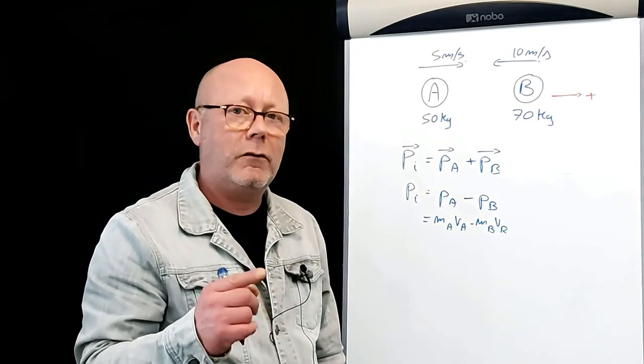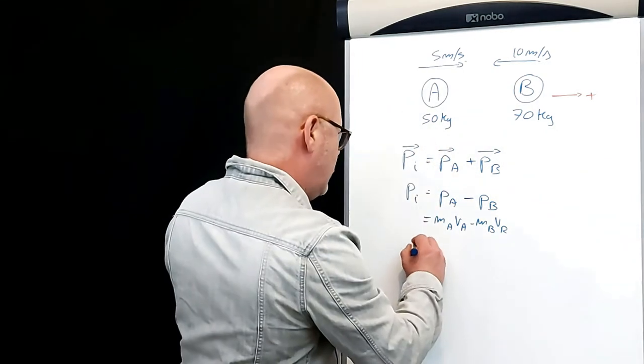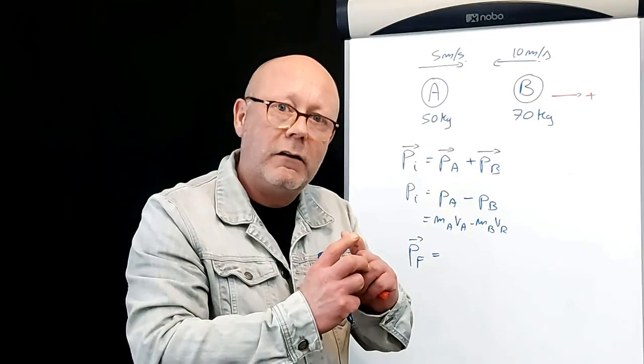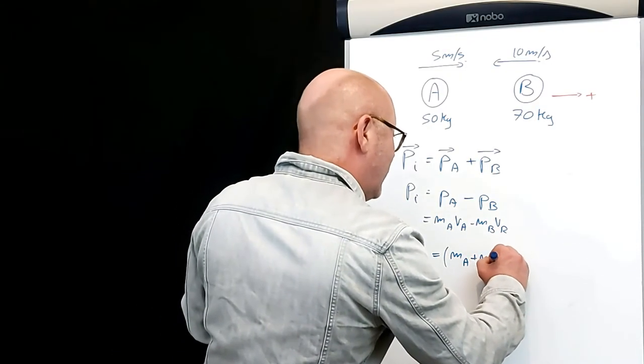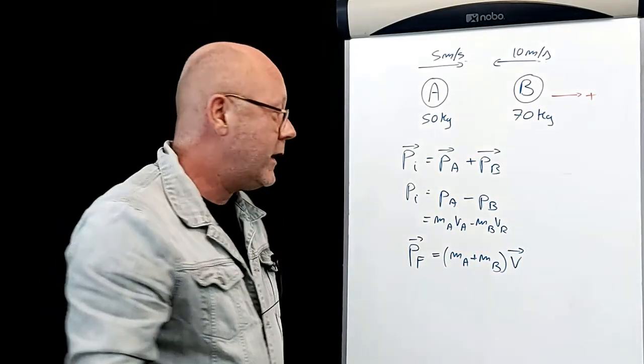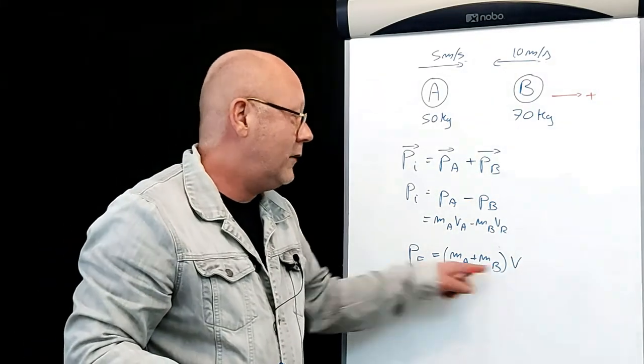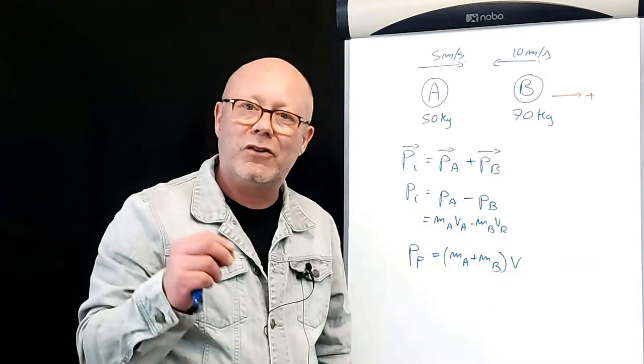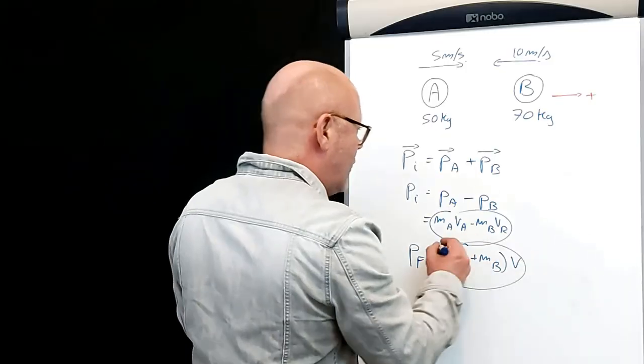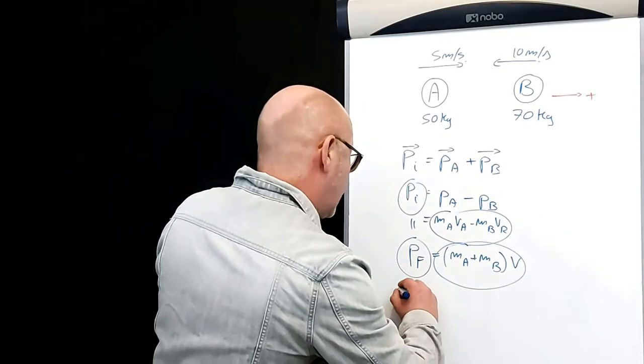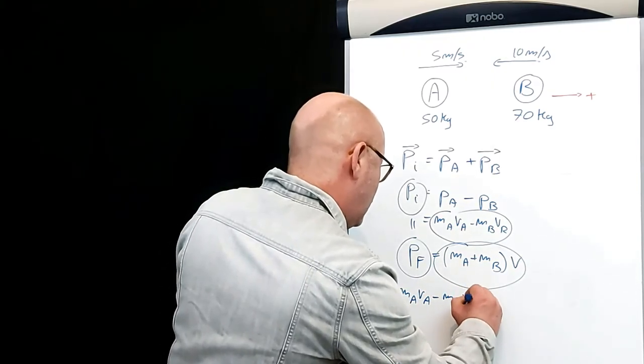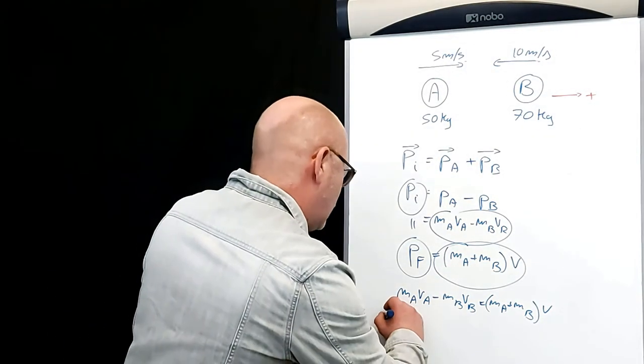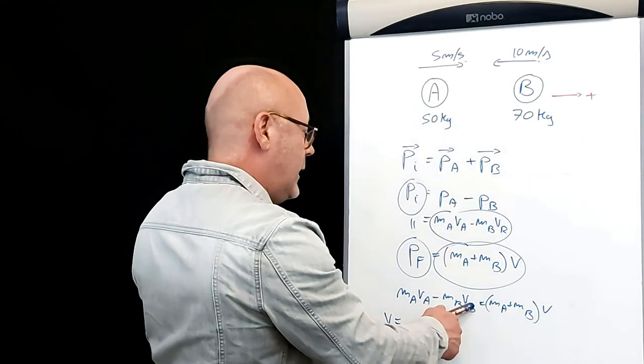Let's calculate now the final momentum of the system. So, it would be PF. The system now is made of the two balls which are clung to each other. They form one single object of mass mA plus mB. And because they are the same object, they go at the same velocity. Now here, I can easily remove the arrow here because it's not an addition. V is just collinear with P. So, they have the same sign. And this is now that the magic of conservation of momentum is going to show up. This equals that because this is equal to that. So, let's write this. mA VA minus mB VB equals (mA plus mB) V. If I rearrange this, I can write down, and I'm going to plug in numbers, (mA VA minus mB VB) over (mA plus mB) equals V.